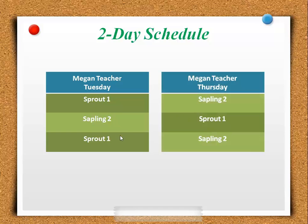It's the same way for sapling too — they are labeled type A. However, you teach them first on Thursday, but again, it doesn't change anything.